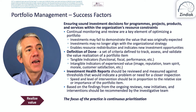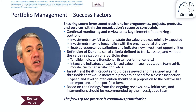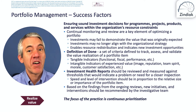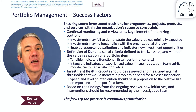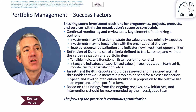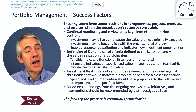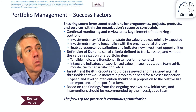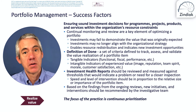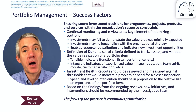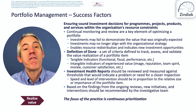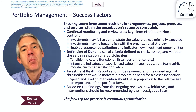Continual monitoring and review are a key element of optimizing your portfolio, and that fits in with agile — at the end of the sprint, you review what you've produced and how you've produced it. Investments may fail to demonstrate the value originally expected or may no longer align with the organization's strategy. It also enables resource redistribution and indicates new investment opportunities. The longer you go without a review, the greater the risk that one of those negatives will impact. The shorter the interval, the lower the risk — but there's a cost to doing a review, so you've got to balance the two. I would say no longer than a month, as Scrum does with sprints of one month or less.